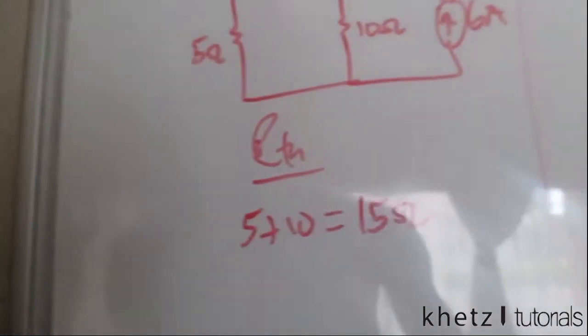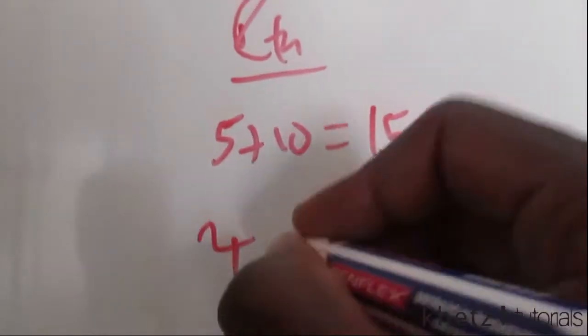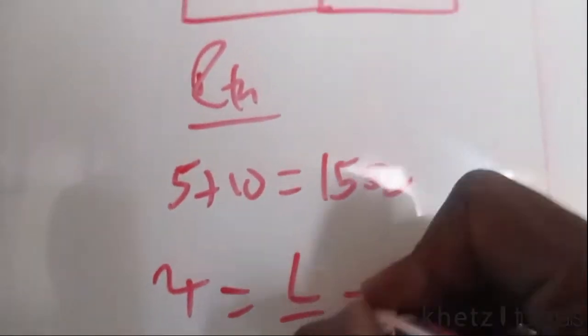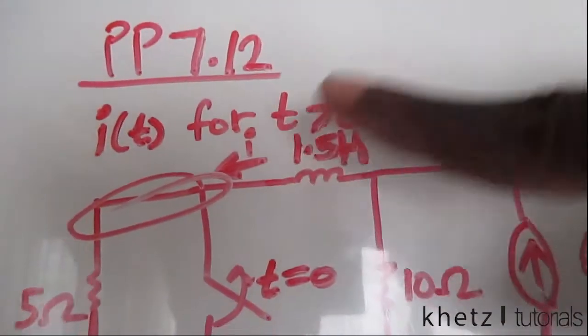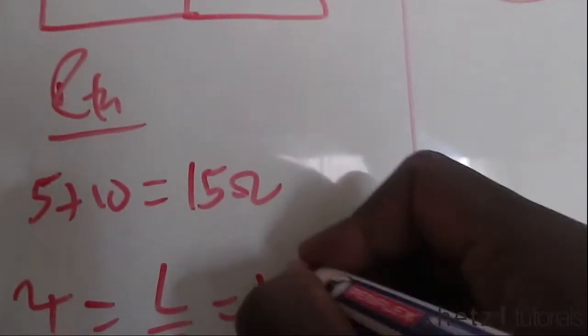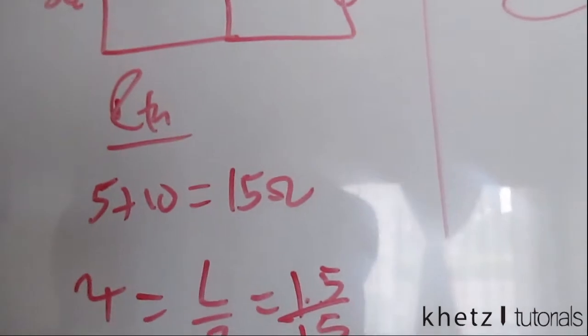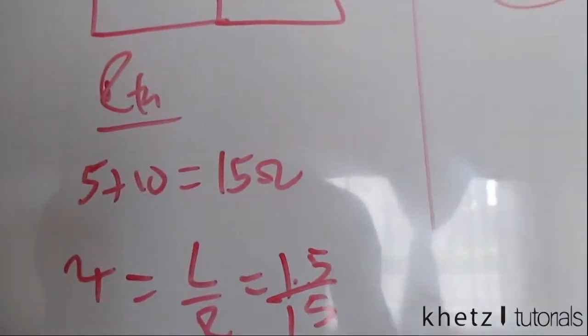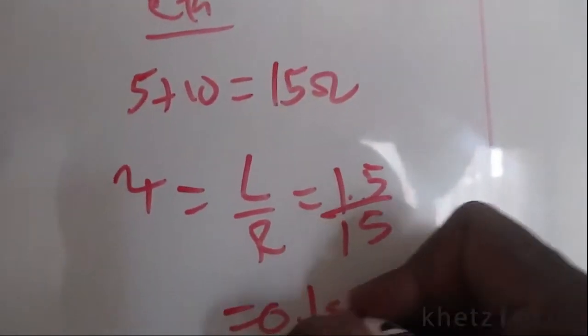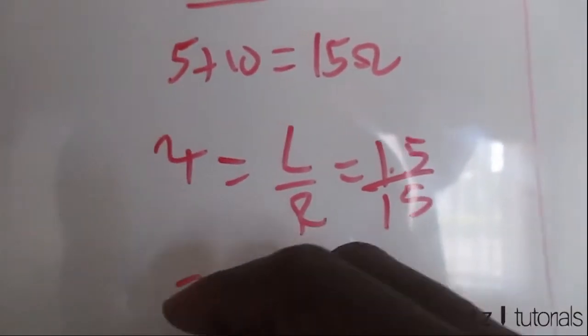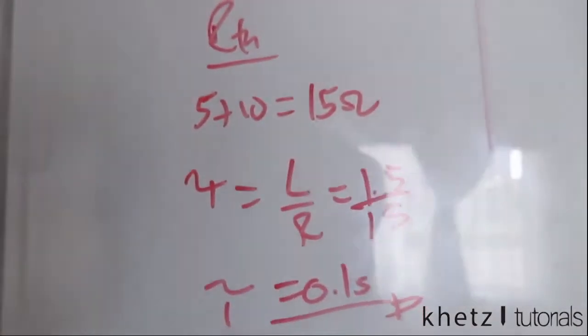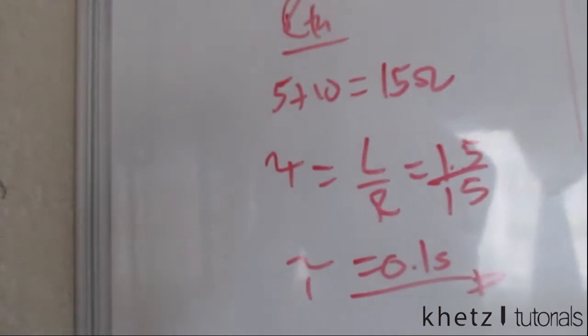That is going to help us find the time constant. The time constant for an RL circuit is L divided by R. The value of this inductor is 1.5 henry and the value of our Rth is 15, which is going to result in a time constant of 0.1 seconds.